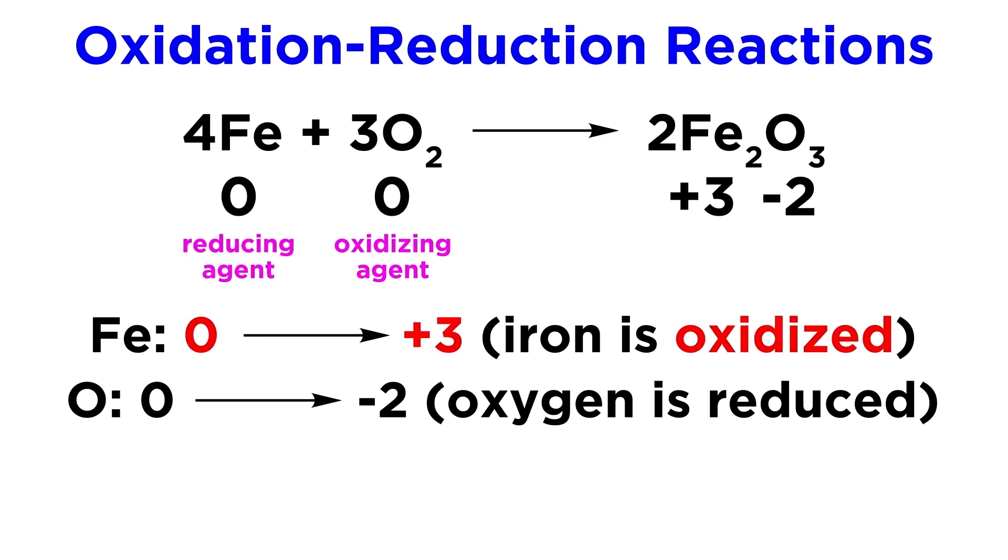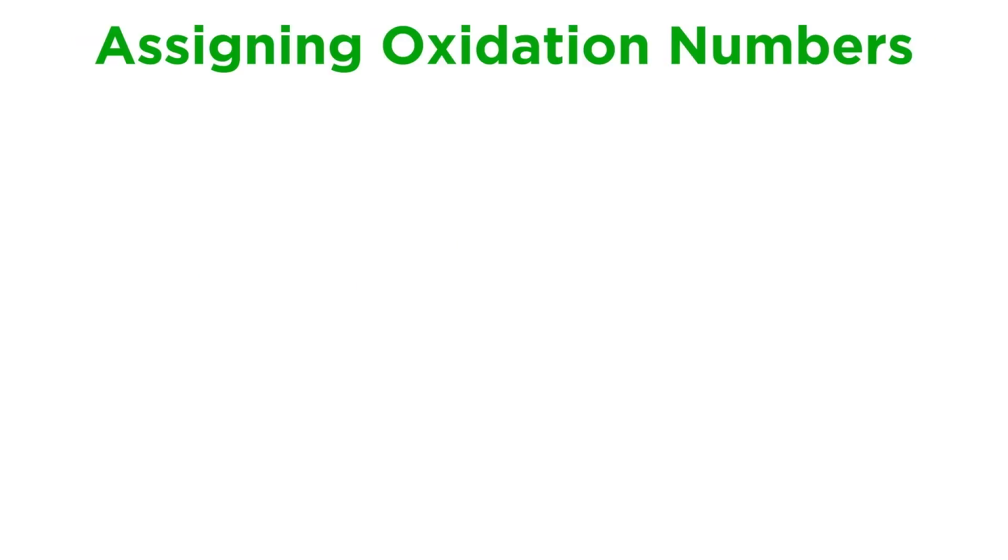Once again, we are just recognizing which element had its oxidation number increase, and which one decreased, as this tells us everything. We should be able to do this for any compound, even polyatomic ions, like the permanganate ion here. What is the oxidation number on manganese?